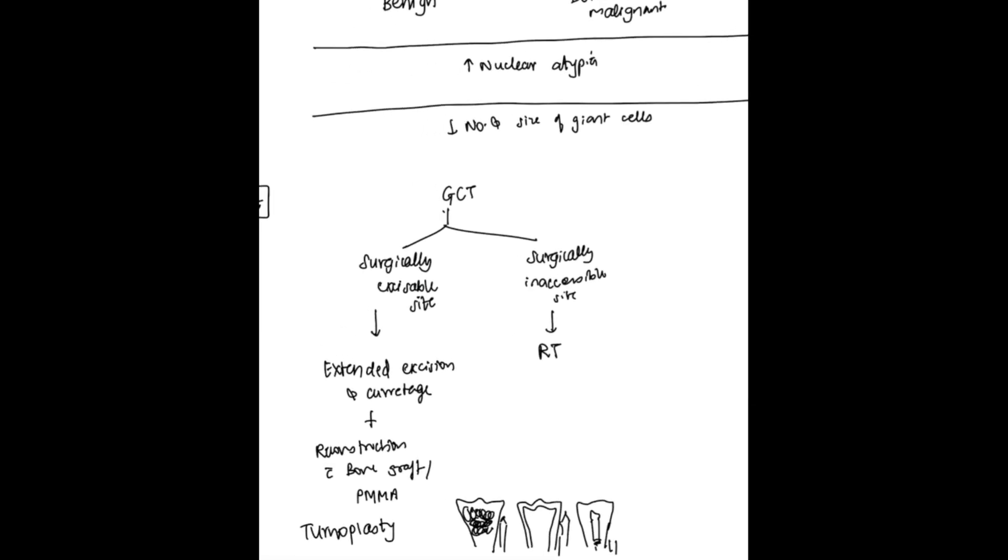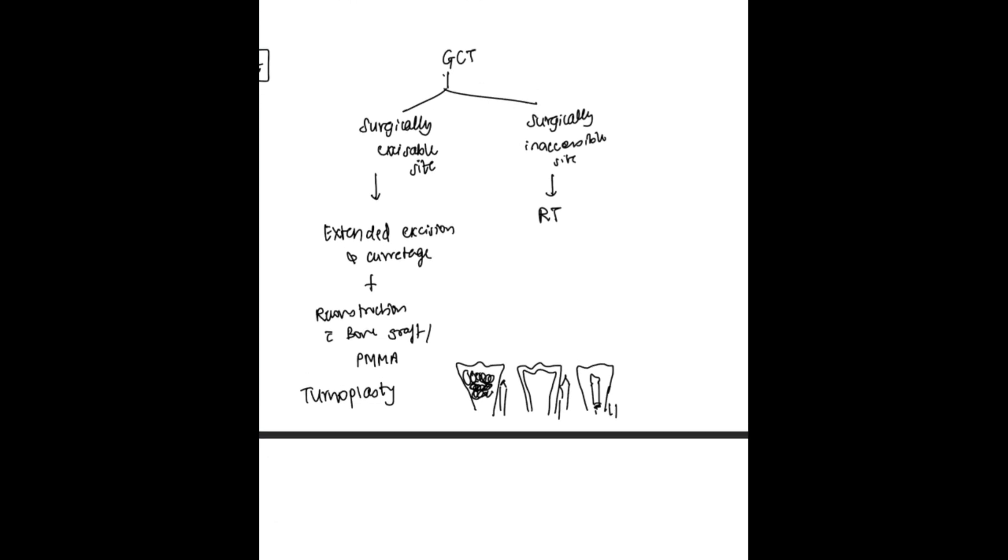Coming to treatment, that is management in giant cell tumor: first of all, investigation part done, then coming to treatment proper. If the location, the site of the tumor is surgically accessible, then extended excision and curettage is to be done for the tumor, plus reconstruction of the bone with bone graft or PMMA polymethylmethacrylate. Turnoplasty can also be tried.